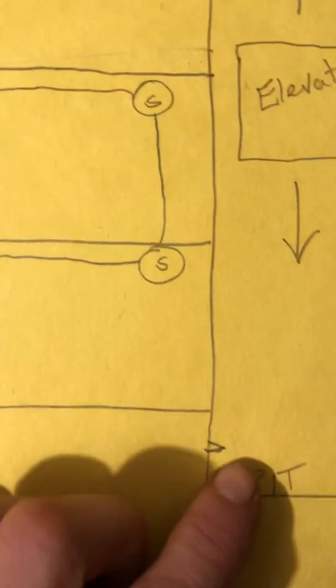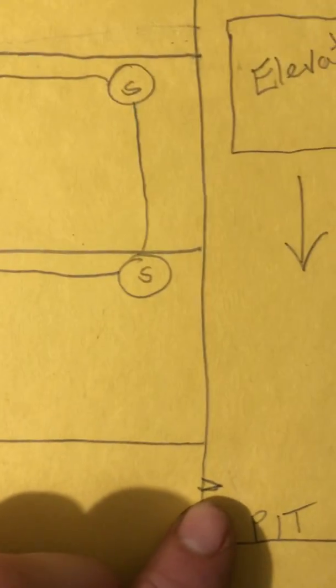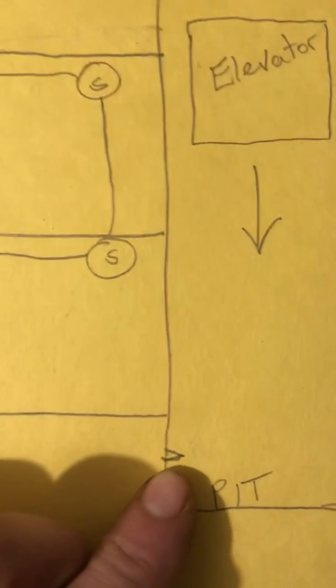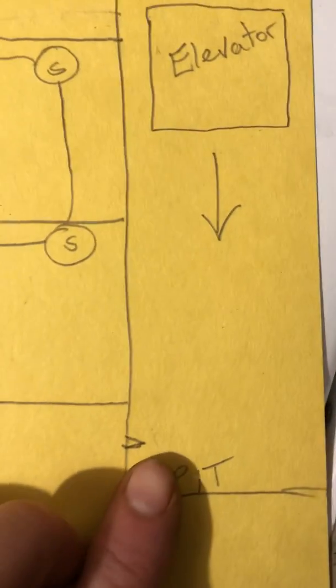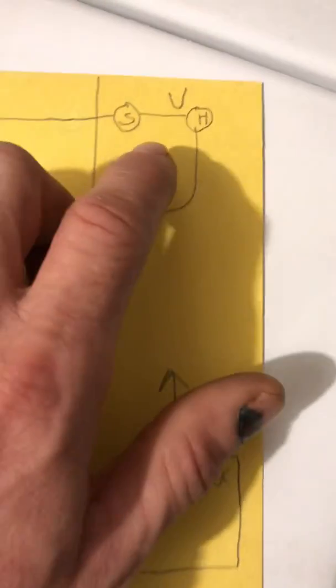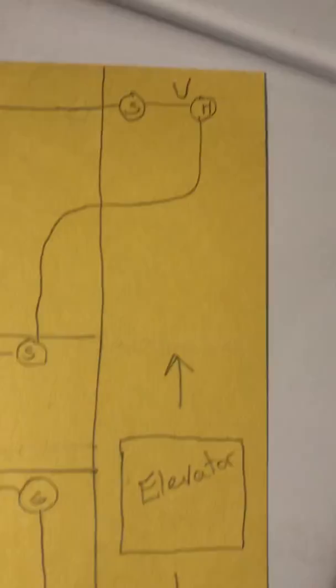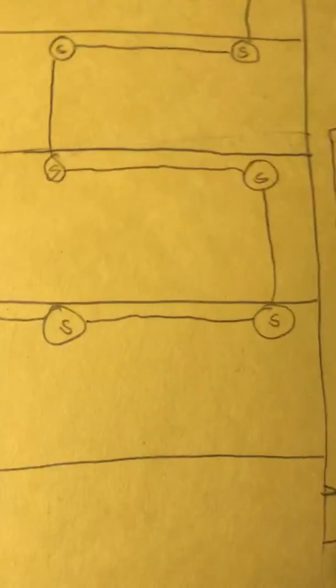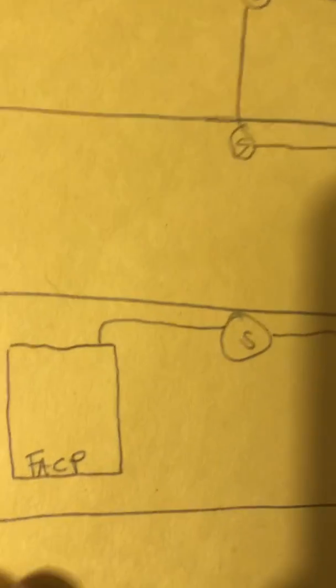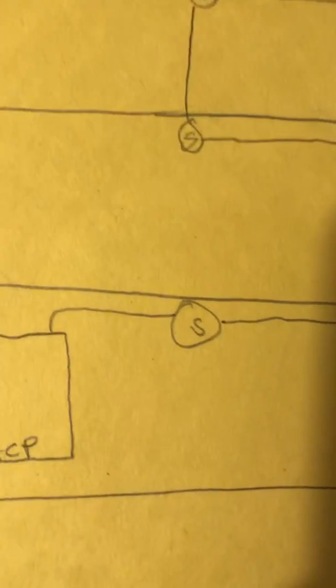Looking down, there's a good chance you're going to be required—in this drawing I didn't put the smokes and the heats in the pit, but there's a good chance you're going to have to do the same thing in the pit that you did in the top of the elevator shaft, and this all goes back to the fire alarm control panel.